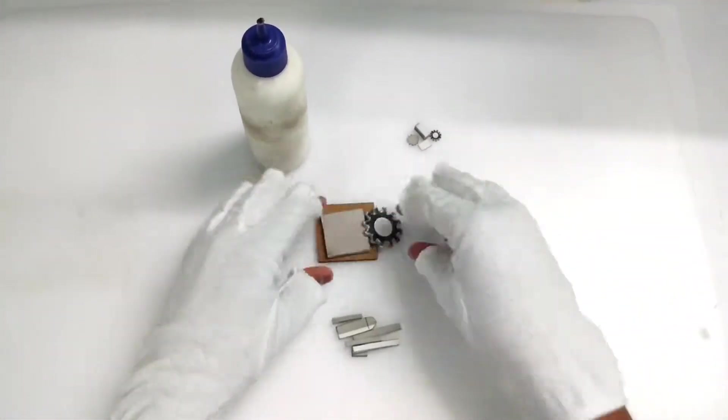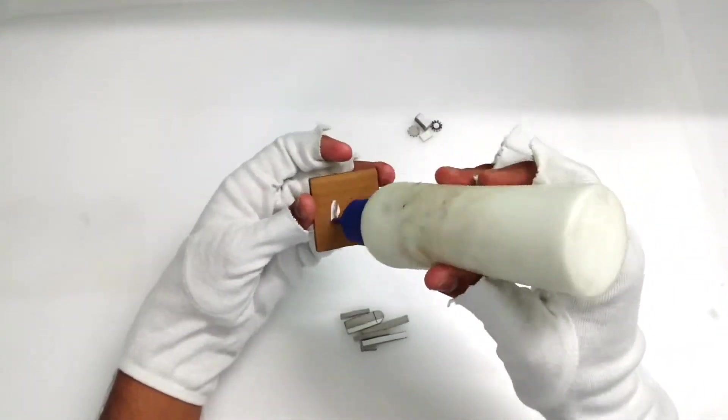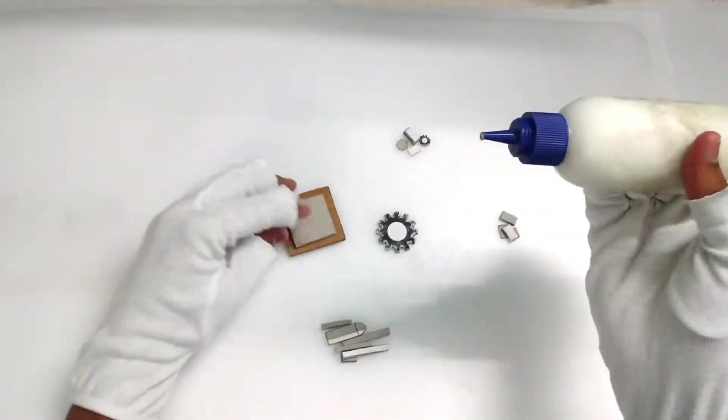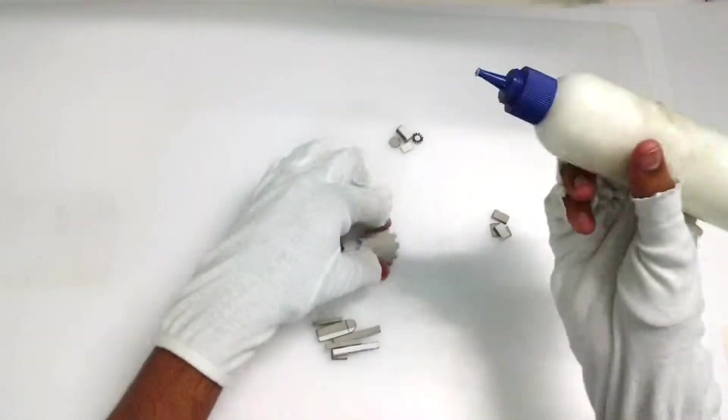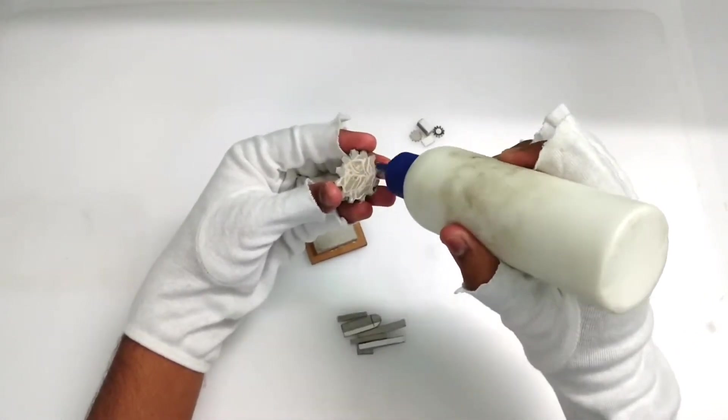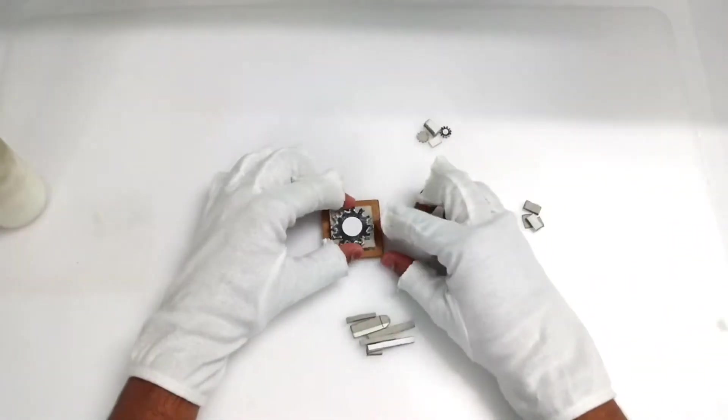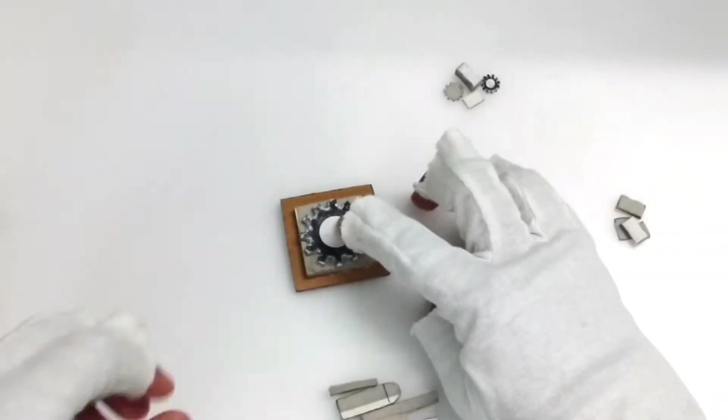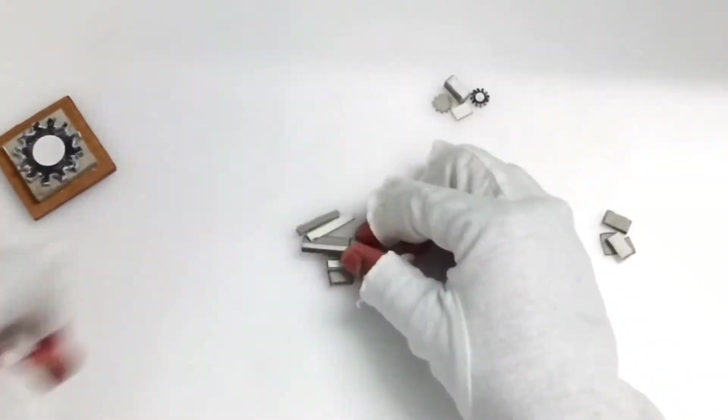Right now guys, I am just fast forwarding this so that we can get it done. Now I've divided the whole thing into three parts. The first thing is the base - it includes the gear, the square piece, and the base. So yeah, just gonna stick them together and the first part is done as you can see.